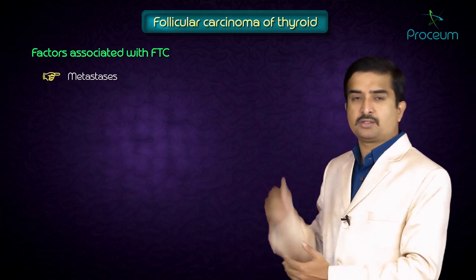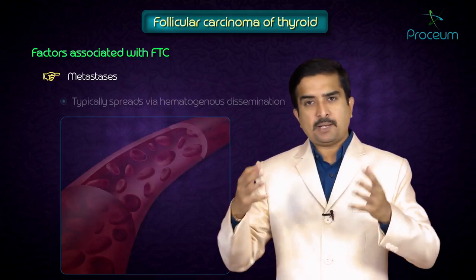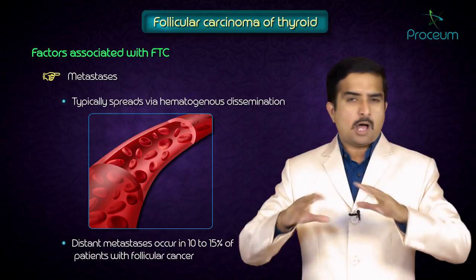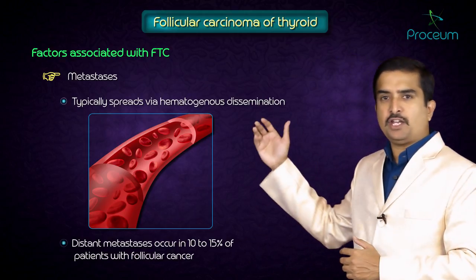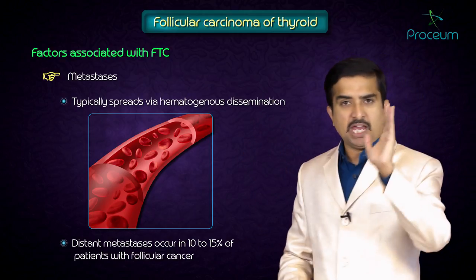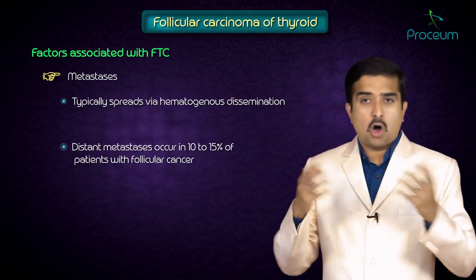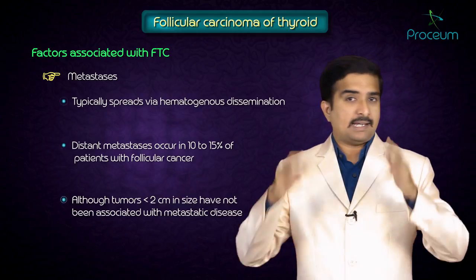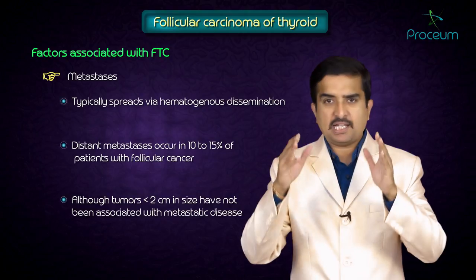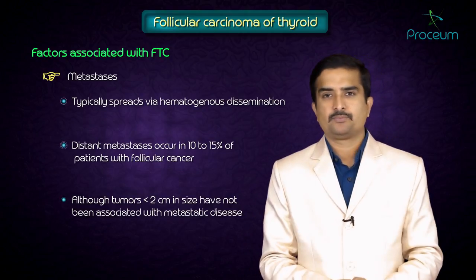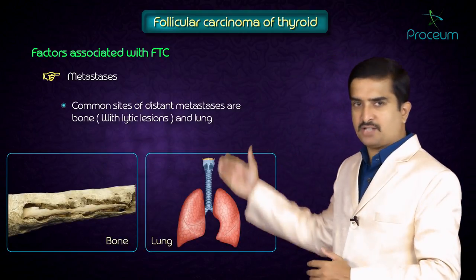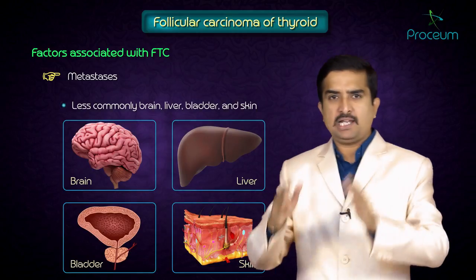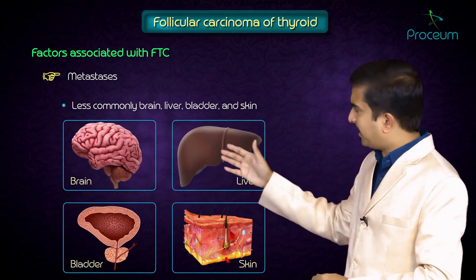Regarding metastasis, follicular thyroid cancer typically spreads via hematogenous dissemination, where distant metastasis occurs in approximately 10 to 15% of patients with follicular cancer, even in those with small primary tumors less than 2 centimeters in size. Common sites of distant metastasis include bone with lytic lesions, as well as the lung, and less commonly the brain, liver, bladder, and skin.